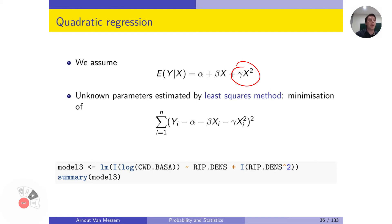Gamma x squared is the extra term. And so it now means that we have to estimate three parameters alpha, beta and gamma, which we again do with the least squares method. So we look at the difference between, on the one hand, the observations, on the other hand, the predictions. We square them, we sum them, and then we minimize again over alpha, beta and gamma.